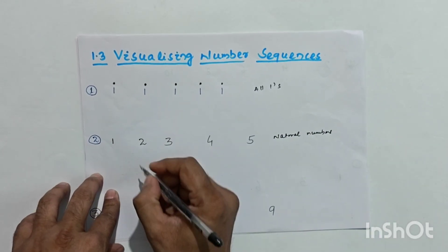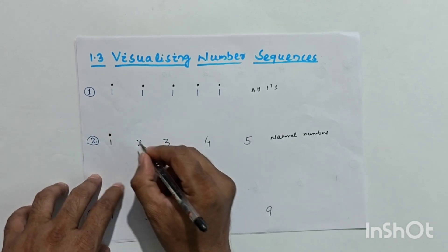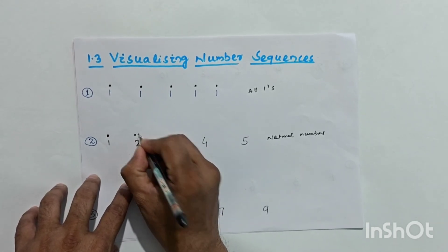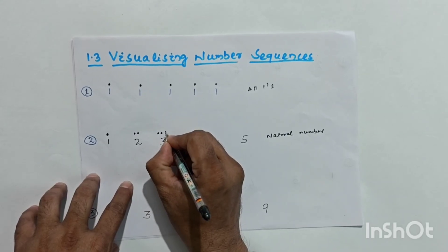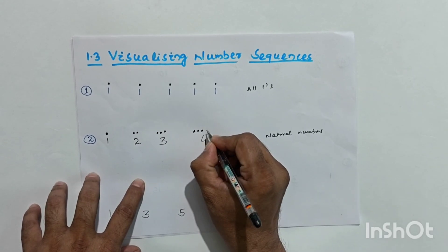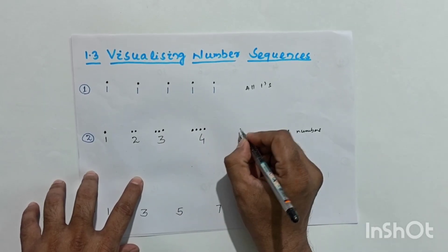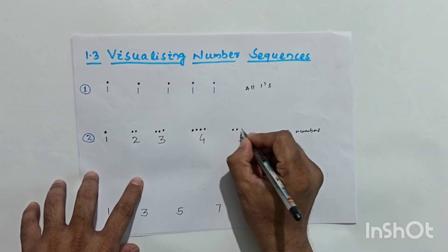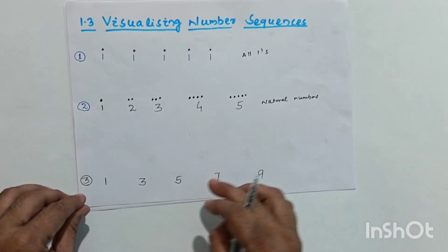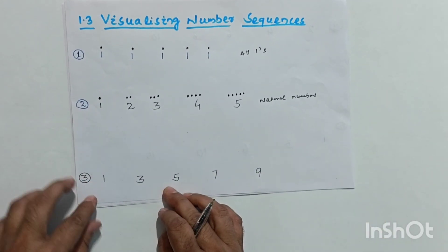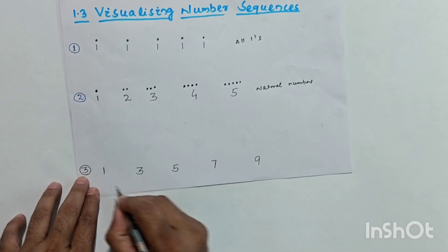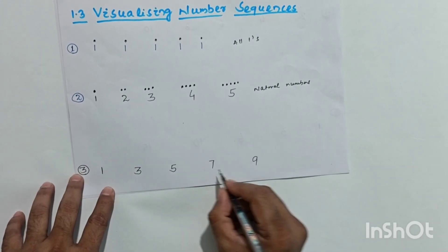For natural numbers, we put one dot in the first position, two dots in the second position, three dots in the third position, four dots in the fourth position, and five dots in the fifth position: 1, 2, 3, 4, 5. The next sequence is odd numbers: 1, 3, 5, 7, 9.